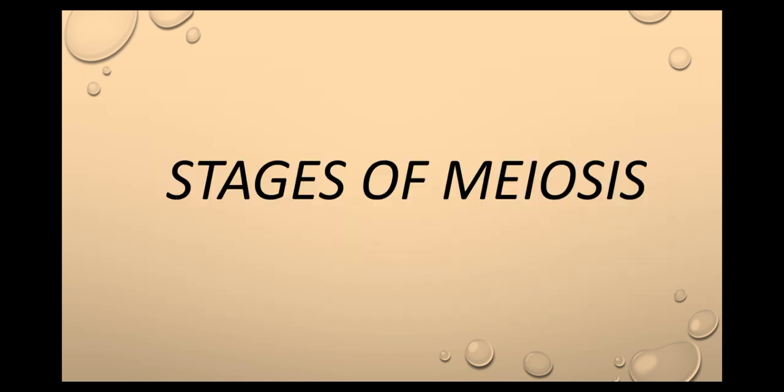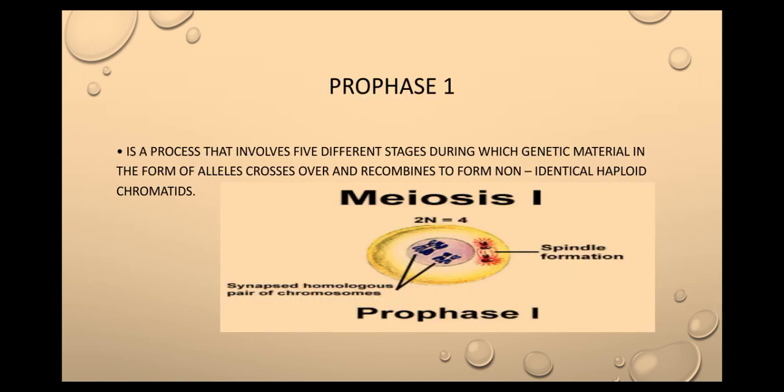Stages of meiosis. First, prophase one is a process that involves five different stages during which genetic material in the form of alleles crosses over and recombines to form non-identical haploid chromatids.